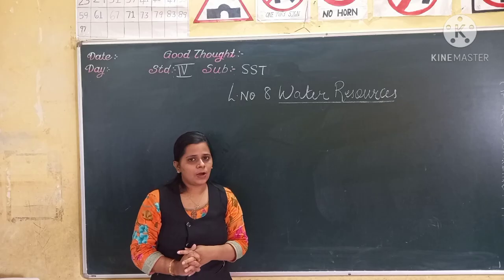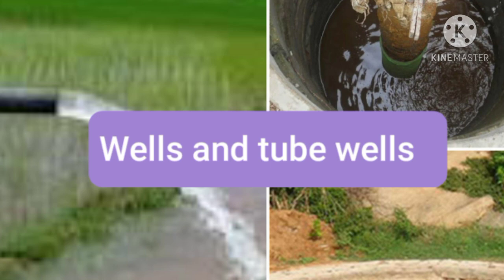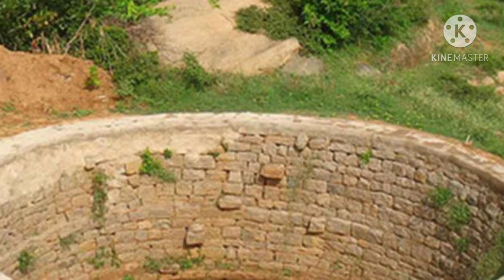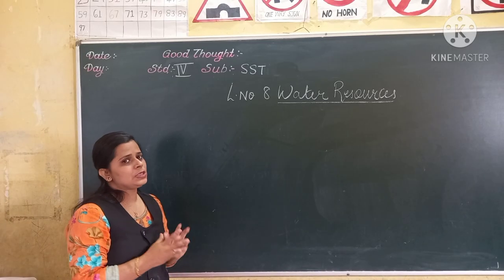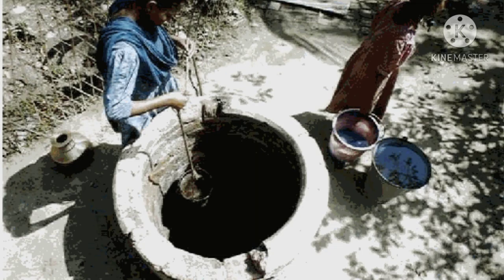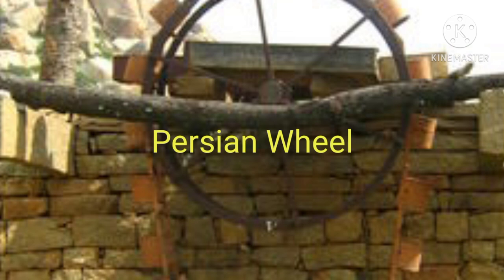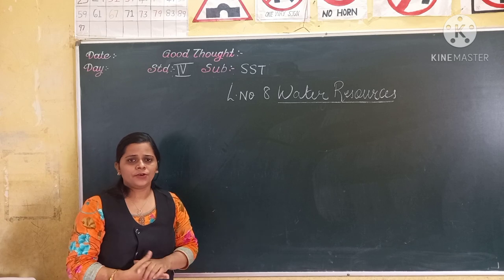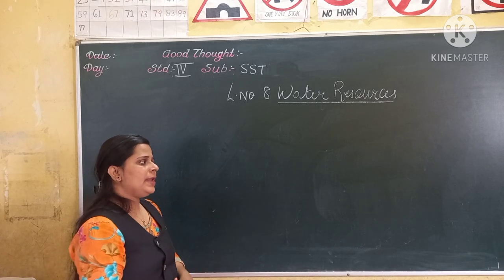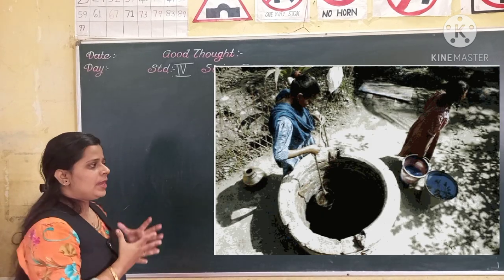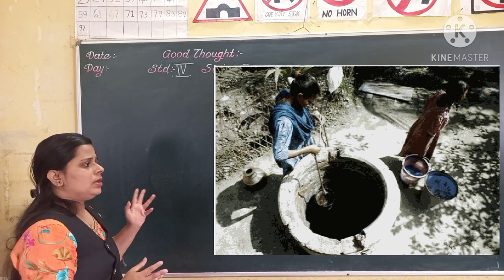Now let's discuss about wells and tube wells. Irrigation through wells is suitable for small farms. In villages, people dig big wells to draw underground water to the surface. The water is drawn out with the help of a Persian wheel, as you can see in the image. This water is used for household activities and for irrigating fields. But many times, this underground water is very deep and we cannot reach it by a regular well.